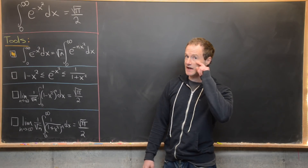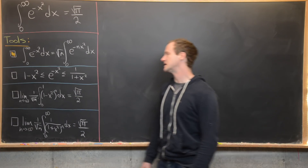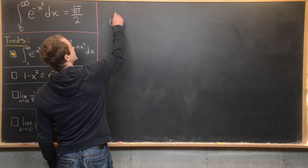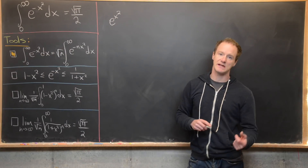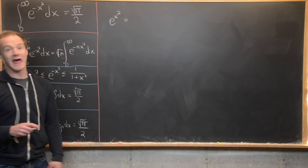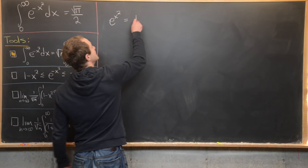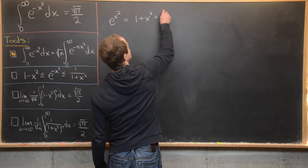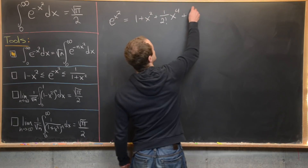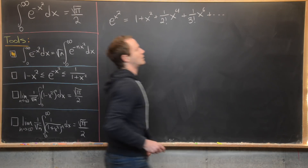The second tool is a nice inequality, developed in two stages: first the upper bound, then the lower bound. For the upper bound, we take e to the x squared and expand it as a Taylor series. The Taylor series gives 1 plus x squared plus (1/2!) x to the 4th plus (1/3!) x to the 6th, with general term (1/n!) x to the 2n.